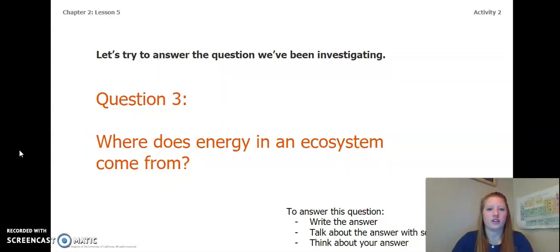Let's try to answer the question we've been investigating. Where does energy in an ecosystem come from? So think back to the food web we just looked at, any books we might have read, and our simulations. To answer this question, write the answer in your chapter two, lesson five activity packet in a notebook. You can talk about the answer with someone near you, or you can think about it in your head. Once again, pause the video and answer this question.